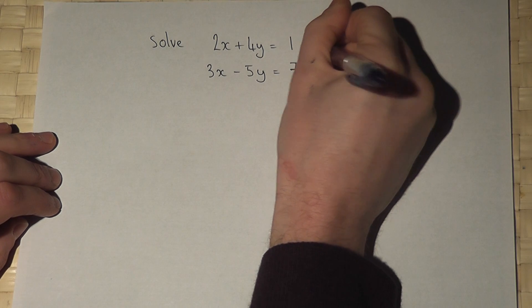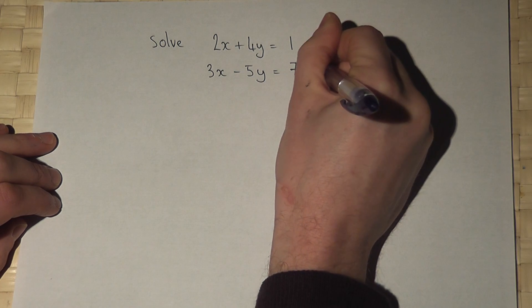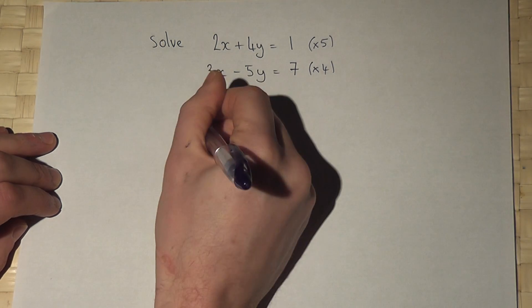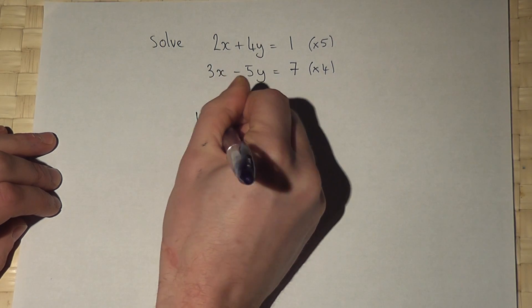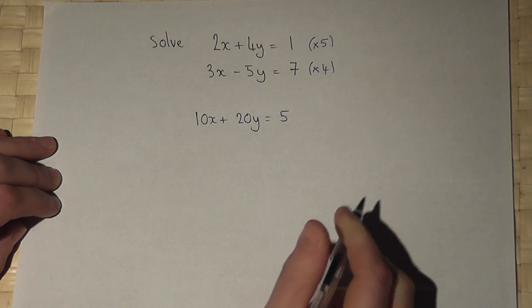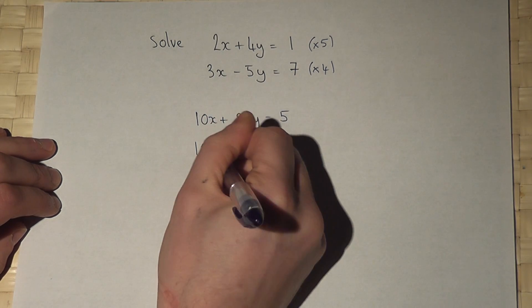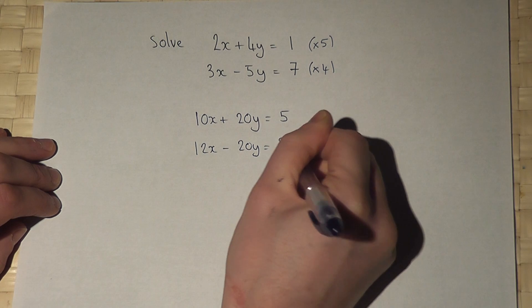If I times the top equation by 5 and the second equation by 4, then the top equation becomes 10x plus 20y equals 5. The second equation becomes 12x take 20y equals 28.